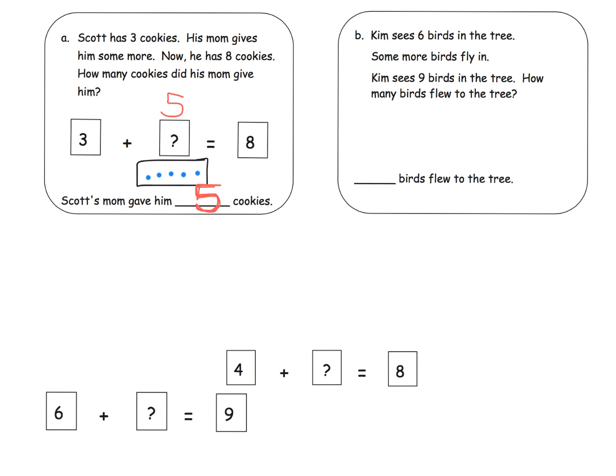And then over here, Kim sees 6 birds in the tree. Some more fly in. Kim sees 9 birds in the tree. How many birds flew into the tree? All right, so which one of these is our matching number expression? And of course, it's going to be this one. And so we just move it right there. So now we have 6 plus what equals 9?